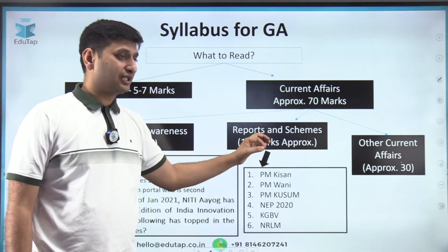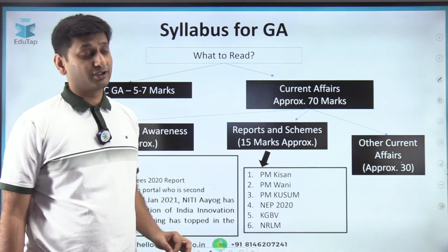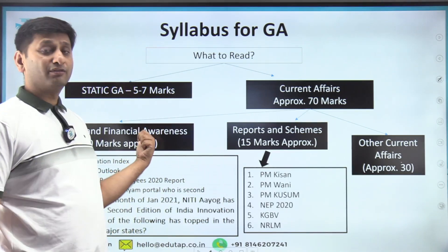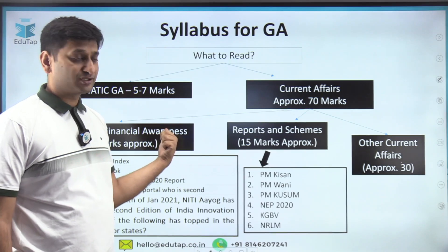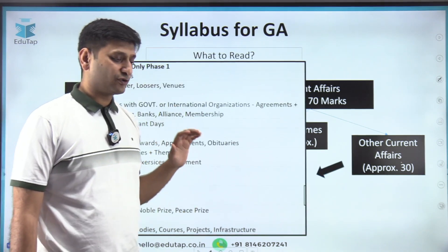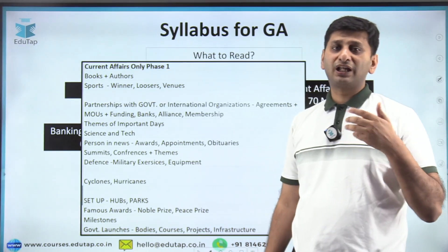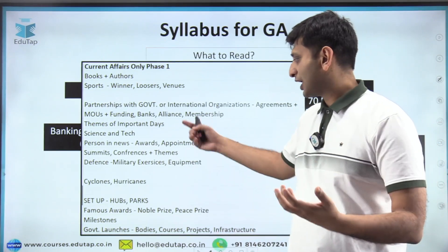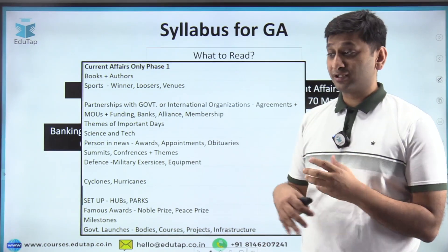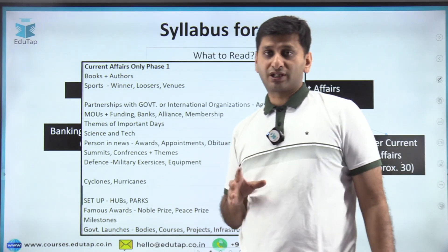Government schemes and government reports that have been in the news recently need to be covered — 15 to 20 marks can come from here. Most students lose marks in banking awareness, RBI notifications, and reports and schemes. This is where the paper goes wrong for many aspirants.